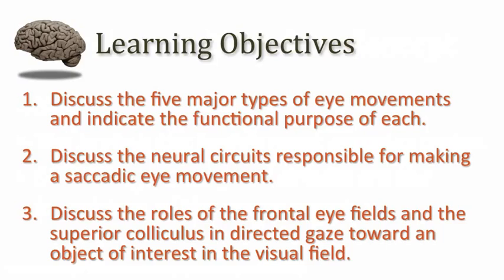We'll focus on two brain regions in particular: the frontal eye fields, which is part of the premotor cortex and the posterior part of the frontal lobe, and the superior colliculus, which is on the dorsal aspect of the midbrain.